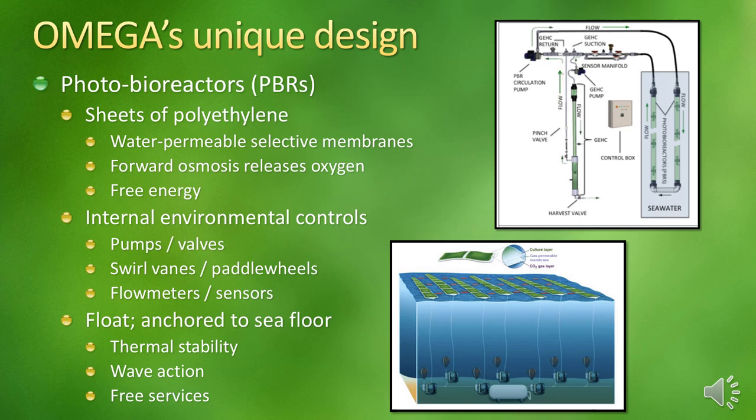Photobioreactors, or PBRs, create artificial environments that cultivate phototrophic organisms and are currently used to grow plants, mosses, microalgae, and bacteria. They allow for controlled supply of specific environmental conditions and achieve higher growth rates and purity levels than a natural habitat. Omega's PBRs float in the ocean and are made from sheets of polyethylene with water-permeable selective membranes incorporated into their surfaces. Because the membranes are selective to an osmotic gradient, water moves in only one direction — performing the passive action of forward osmosis. Microalgae cleanse the wastewater as they grow, and the cleansed fresh water moves across the membranes into the saline ocean environment, but never the other way around.